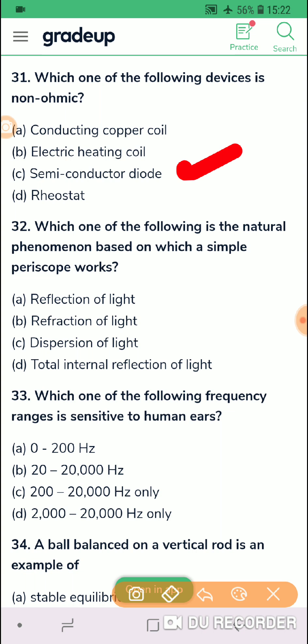Which one of the following is the natural phenomena based on which a simple periscope works? Periscope basically there are two plane mirrors, they are facing each other and in a vertical column they are fitted at 45 degrees, so it is only based on reflection. So in question 32 I will go for the reflection of light, the first option is correct.